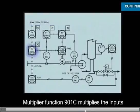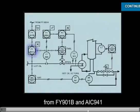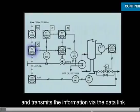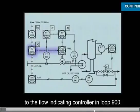Multiplier function 901c multiplies the inputs from FY901b and AIC941 and transmits the information via a data link to the flow indicating controller in Loop 900.